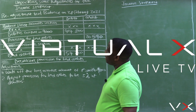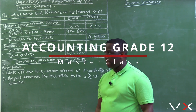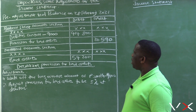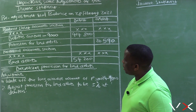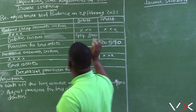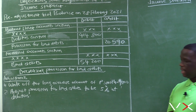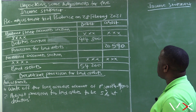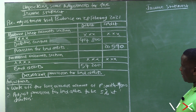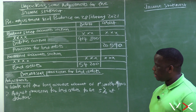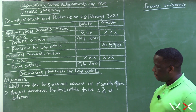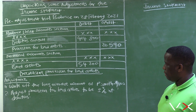We are unpacking some adjustments for the purposes of the income statement. Here we have the pre-adjustment trial balance on 28 February 2021. Under the balance sheet account section we have debtors control at 414,800, provision for bad debts at 20,590, and under the nominal account section we have bad debts to the value of 54,200. Our topic today is provision for bad debts — specifically decreasing provision for bad debts.